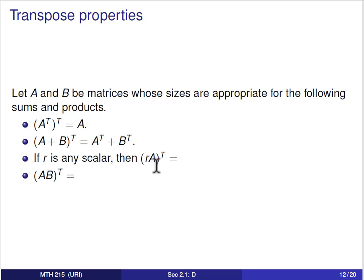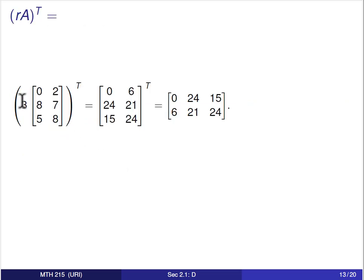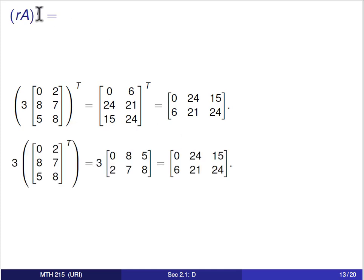If you have scalar multiplication and a transpose, they interact simply: doing scalar multiplication inside a transpose and then transposing, versus taking the transpose first and then doing scalar multiplication, gives the same result. These two processes are independent of each other. So (rA)ᵀ = r·Aᵀ.